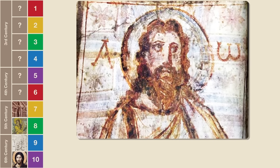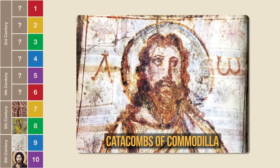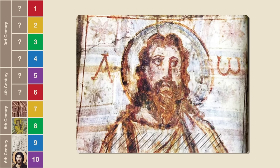Take, for example, this next image from the Catacombs of Commodilla. Here we have what's likely the oldest surviving image of a bearded Jesus, dating to around 375 CE. What's interesting about this 1,650-year-old image is that it's not too far off from the average image of Jesus we see today. The two symbols on each side of his halo are an alpha and an omega, the first and last letters of the Greek alphabet, often used by early Christians to represent the belief that Jesus has existed for all eternity.